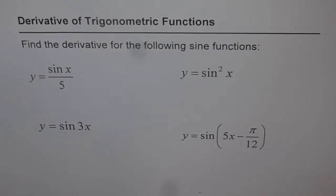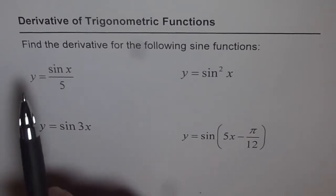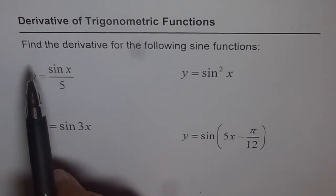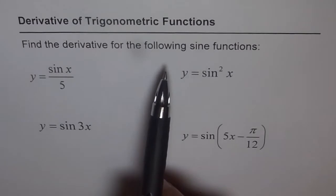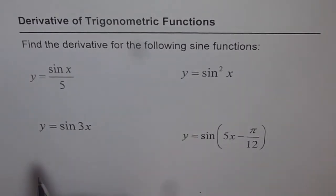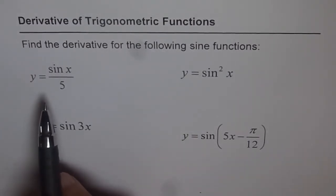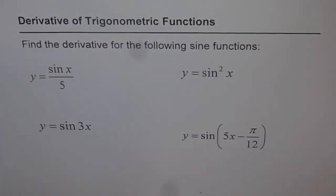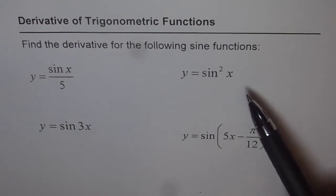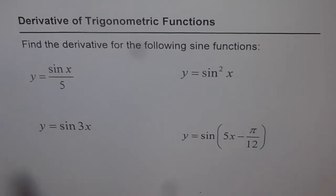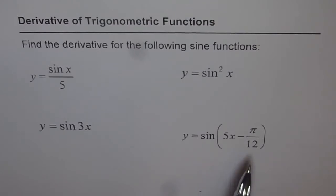Let's start with derivatives of trigonometric functions — the sine function is always our starting point. The question here is: find the derivative for the following sine functions. We have y equals sine of x over 5, y equals sine squared x, y equals sine 3x, and y equals sine of 5x minus pi by 2.